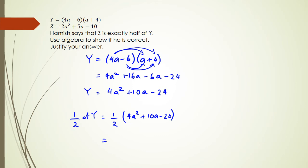Okay, so what we have is 4a squared over 2 plus 10a over 2 minus 24 over 2. And when we simplify this, we actually end up getting 4a squared over 2 is 2a squared, 10a over 2 is 5a, and then negative 24 divided by 2 is negative 12.